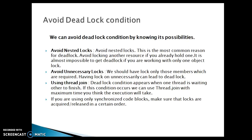The third point: using thread join. A deadlock condition appears when one thread is waiting for another to finish. If this condition occurs, we can use thread dot join. Join is a method in the Thread class. There are three variants of join: the first takes no parameter, and the remaining two take a long argument — one takes just long (milliseconds), and the third takes long as well as nanoseconds.